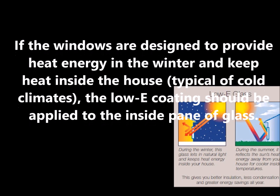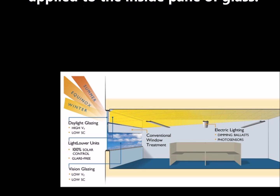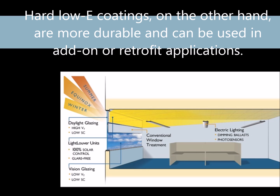Window manufacturers apply low-E coatings in either soft or hard coats. Soft low-E coats degrade when exposed to air and moisture; they are easily damaged and have a limited shelf life. Therefore, manufacturers carefully apply them in insulated multiple pane windows. Hard low-E coatings, on the other hand, are more durable and can be used in add-on or retrofit applications, though their energy performance is slightly poorer than that of soft coat films. Although low-E coatings are usually applied during manufacturing, some are available for do-it-yourselfers. These films are inexpensive compared to total window replacements; they last from 10 to 15 years without peeling, save energy, increase comfort, and reduce fabric fading.